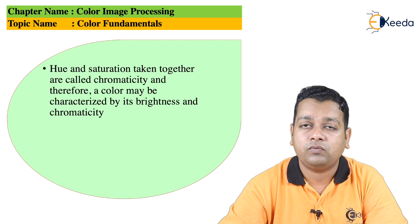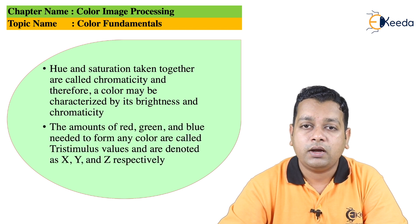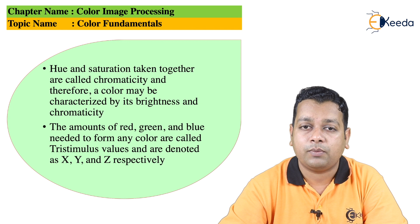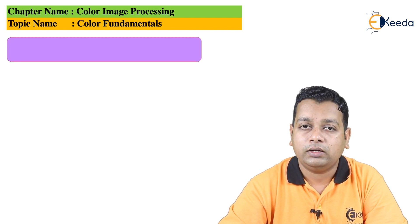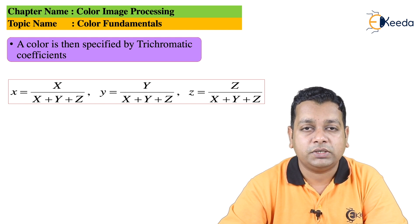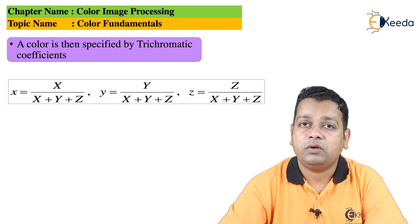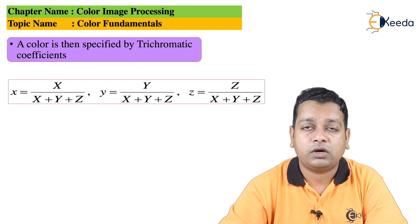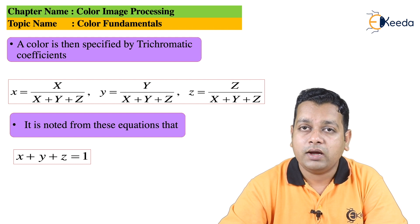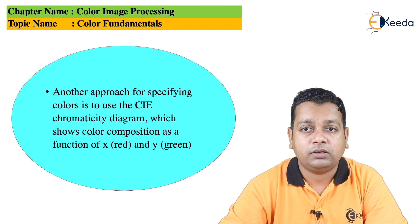Hue and saturation taken together are termed chromaticity, so a color may be characterized by its brightness and chromaticity. The amounts of red, green, and blue needed to form any particular color are called tristimulus values, denoted X, Y, and Z respectively. From these we compute: x = X/(X+Y+Z), y = Y/(X+Y+Z), and z = Z/(X+Y+Z). Notably, x + y + z = 1. Another approach to specifying colors uses the CIE chromaticity diagram, which shows color combinations as a function of only two variables: x (representing red) and y (representing green).